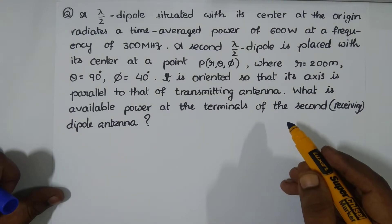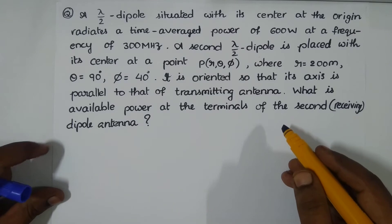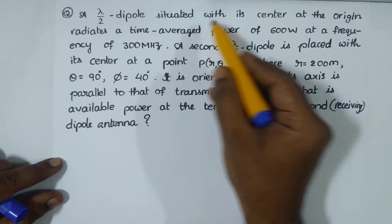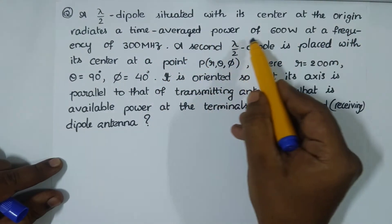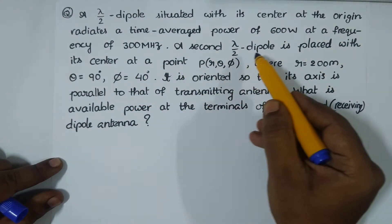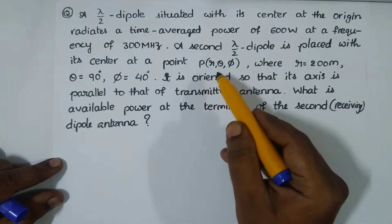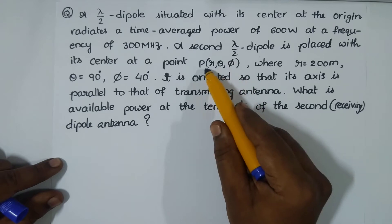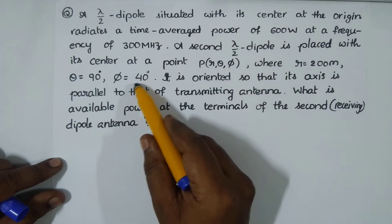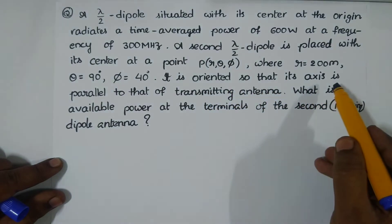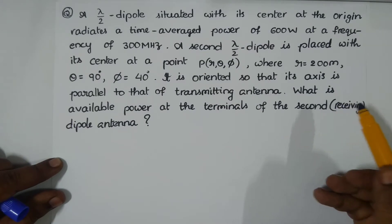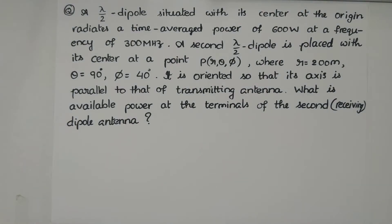Here we have an interesting question from antennas and propagation, under linear wire antennas or dipole antennas. A λ/2 dipole antenna situated with its center at the origin radiates a time-averaged power of 600 watts at a frequency of 300 MHz. A second λ/2 dipole antenna is placed with its center at point P with coordinates r=200 meters, θ=90°, φ=40°, oriented so its axis is parallel to the transmitting antenna. What is the available power at the terminals of the receiving dipole antenna?